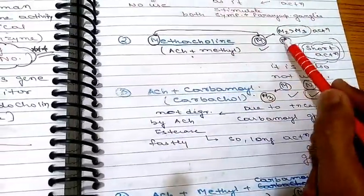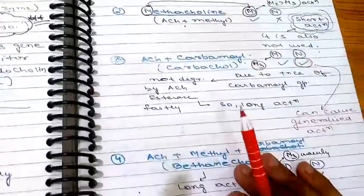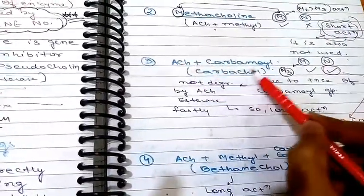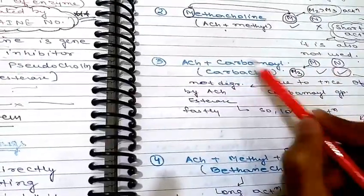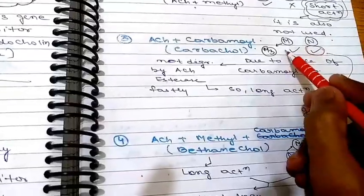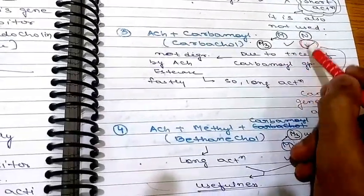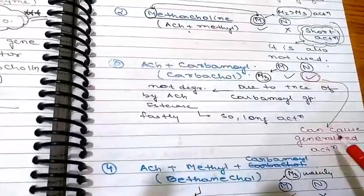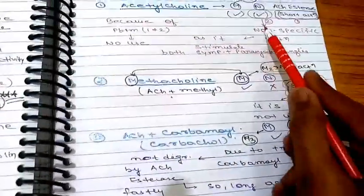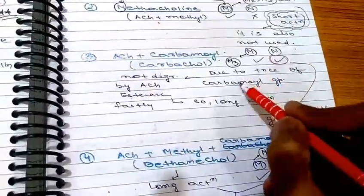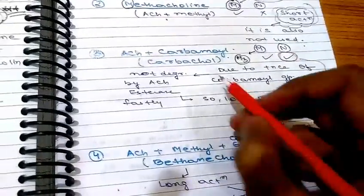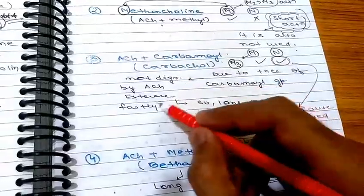The next ester is carbachol, formed by combining a carbamoyl group with acetylcholine. Carbachol acts mainly on M receptors but also acts on N receptors, making it non-specific in action. It is therefore not commonly used because of its generalized action. However, importantly, addition of the carbamoyl group makes it degraded very slowly by acetylcholinesterase, so it can have a longer action.